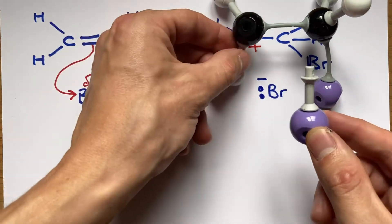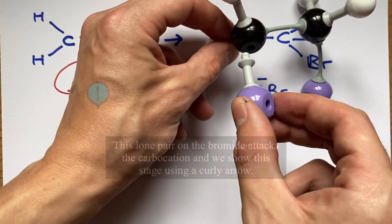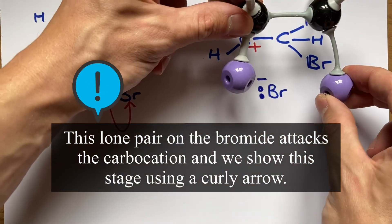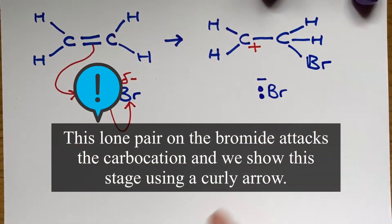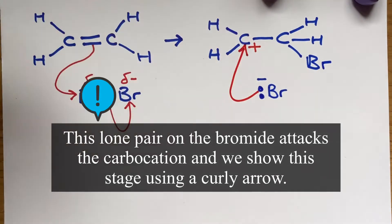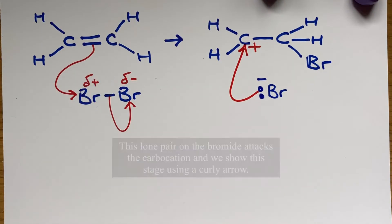What happens next is the lone pair from the bromide ion attacks this carbocation, and we demonstrate this with the movement of a curly arrow. Our final product is our target molecule, it's 1,2-dibromoethane.